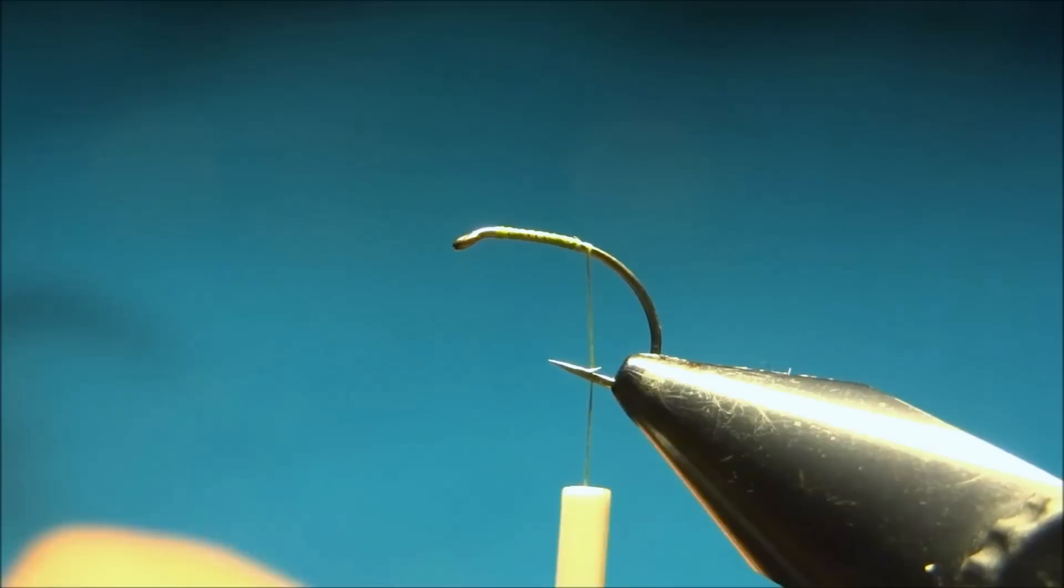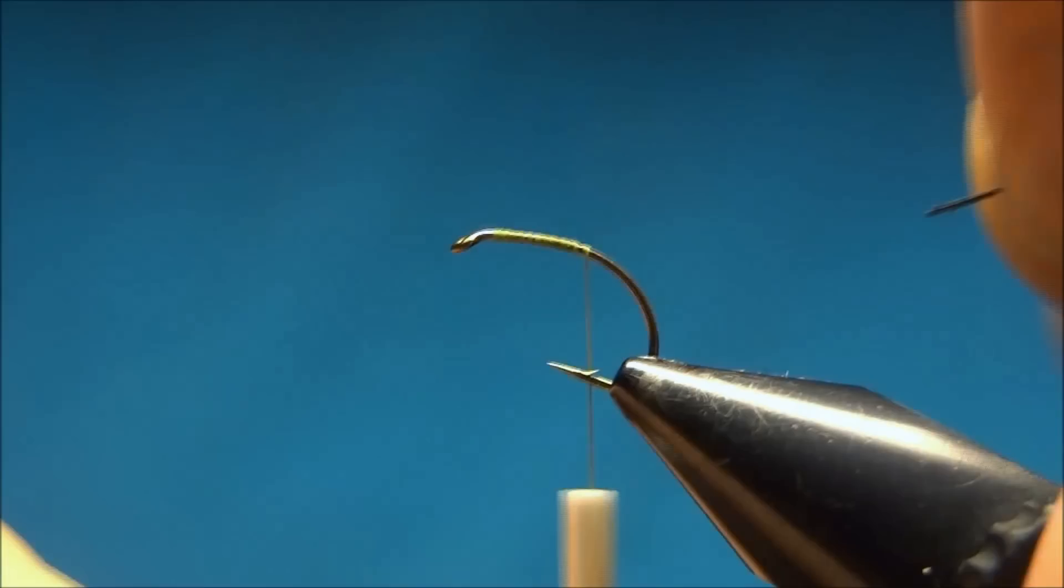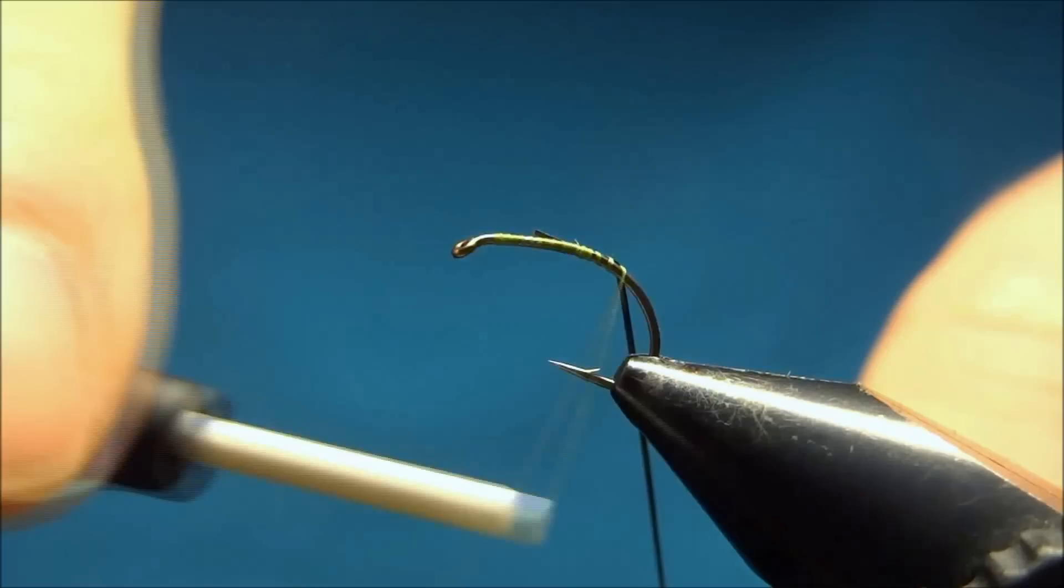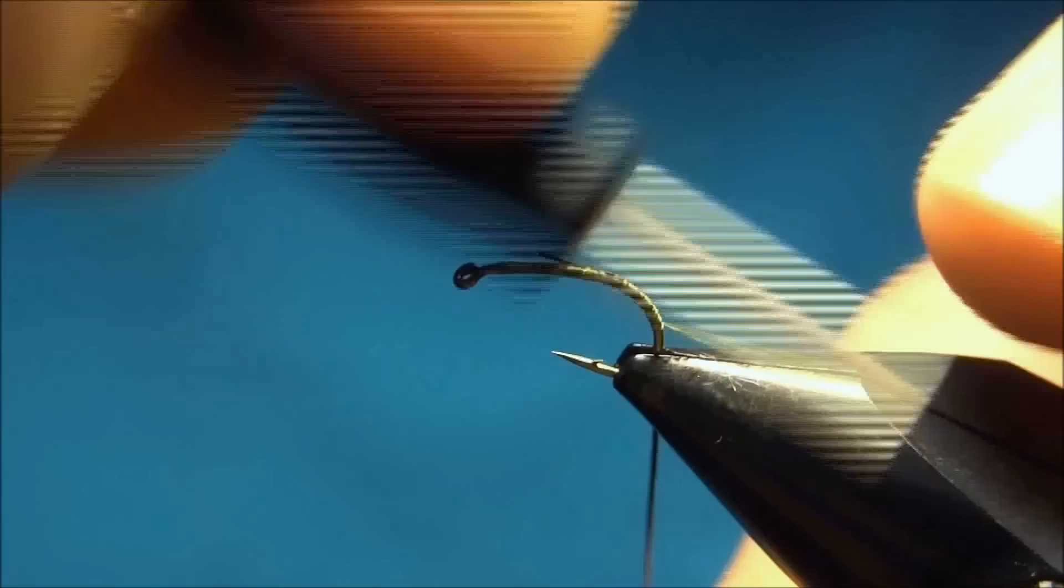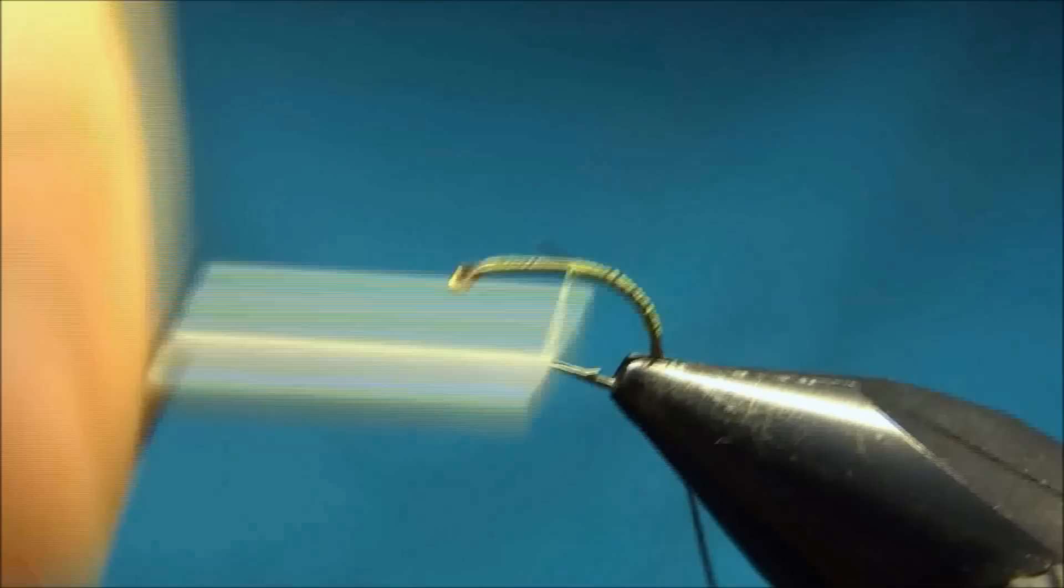Then we'll tie in our first material, which is a stripped peacock curl. We'll tie it in the length of the body. So just tie it down. You want the body to be fairly long, so go down to the bend, then back up.